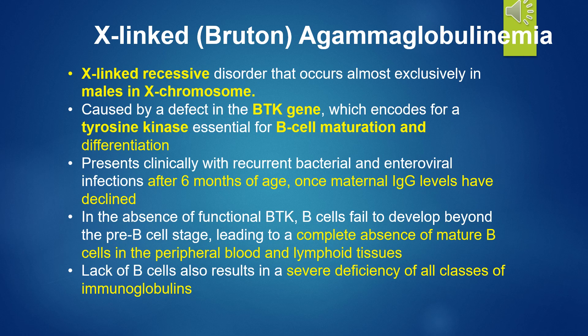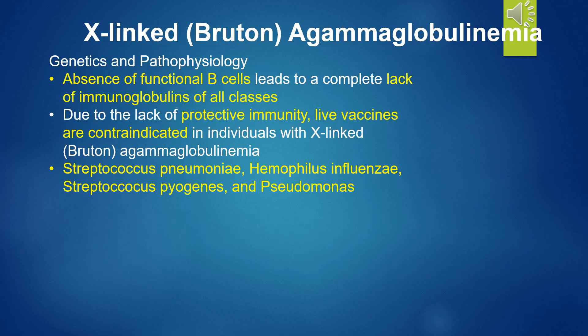Lack of B-cells results in a severe deficiency of all classes of immunoglobulins. Due to the lack of protective immunity, live vaccines are contraindicated in individuals with XLA.